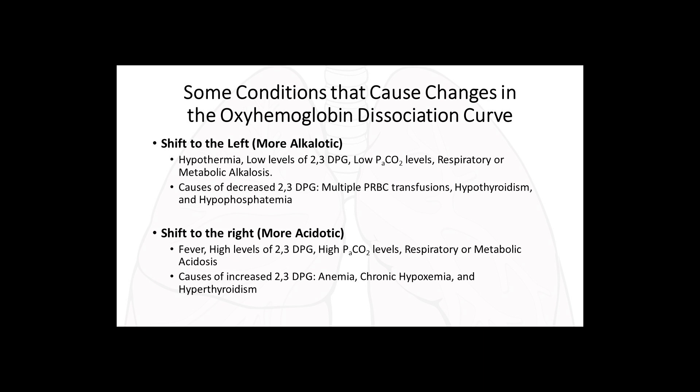To summarize: a shift to the left is associated with hypothermia and low levels of 2,3-DPG, which plays a role in hemoglobin's affinity for oxygen. Causes of decreased 2,3-DPG include multiple PRBC transfusions, hypothyroidism, and hypophosphatemia — which may cause more alkalosis. A shift to the right, making you more acidic, is associated with fever, high levels of 2,3-DPG, and respiratory or metabolic acidosis. Causes of increased 2,3-DPG include anemia, chronic hypoxemia, and hyperthyroidism.